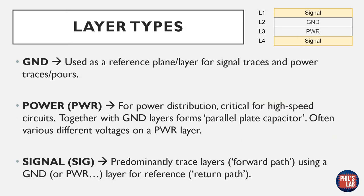One of the most important layer types is the ground layer. Ground is used as a reference plane for signal traces and power traces, because for every forward path we need a return path to complete the loop. The second layer type is the power (PWR) layer for power distribution — for low-speed systems this isn't entirely critical and you can route power with traces, but power planes become increasingly important for high-speed circuits. If coupled with an adjacent ground layer, they form a parallel plate capacitor. Lastly, the signal layer is where we route our forward path traces, using ground or a power layer as a reference for the return path.